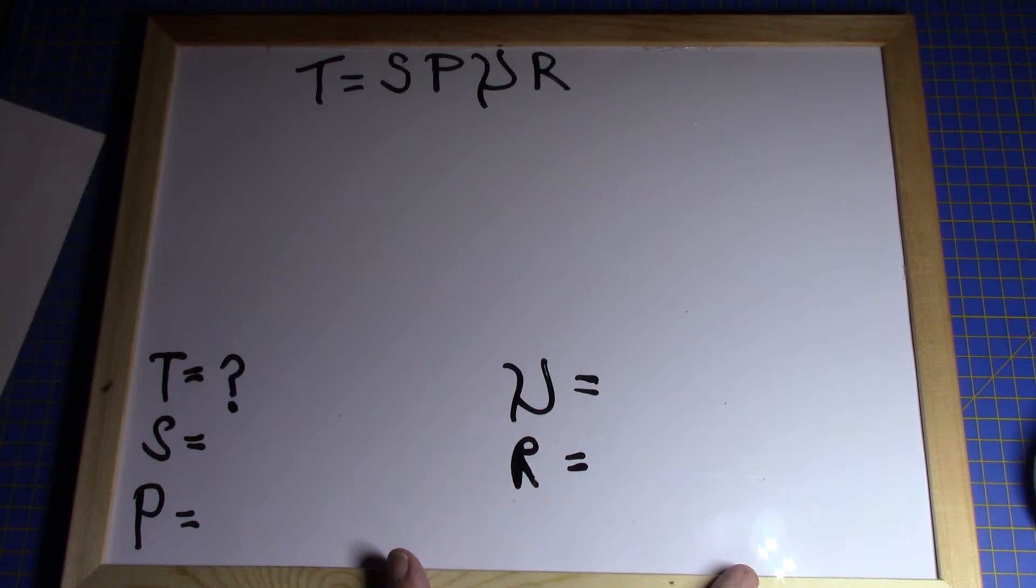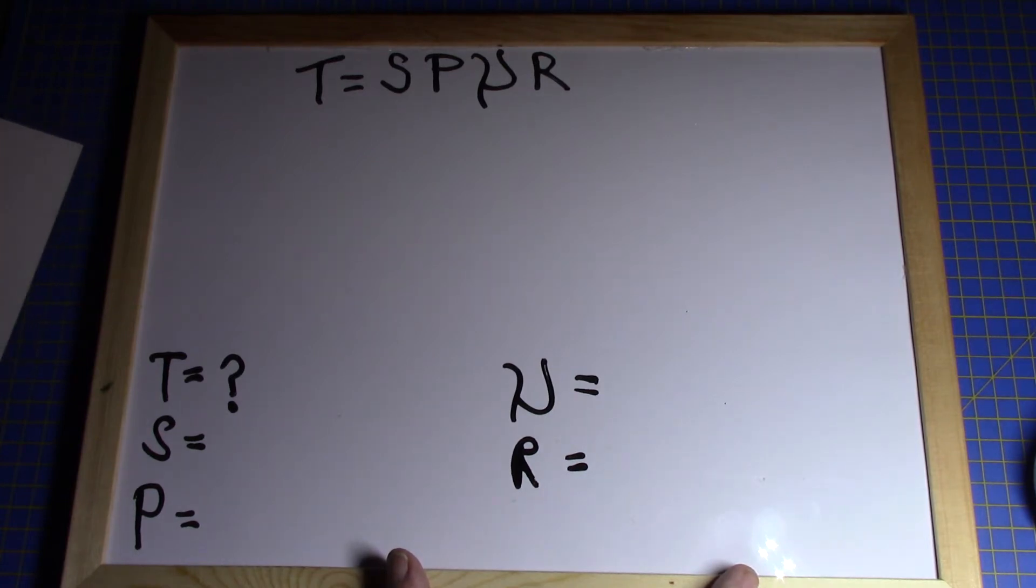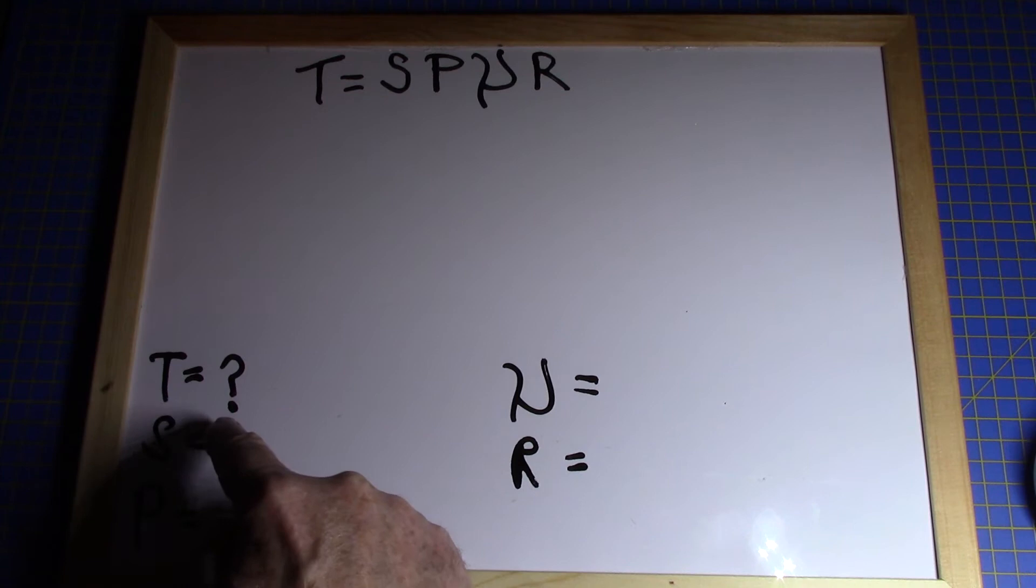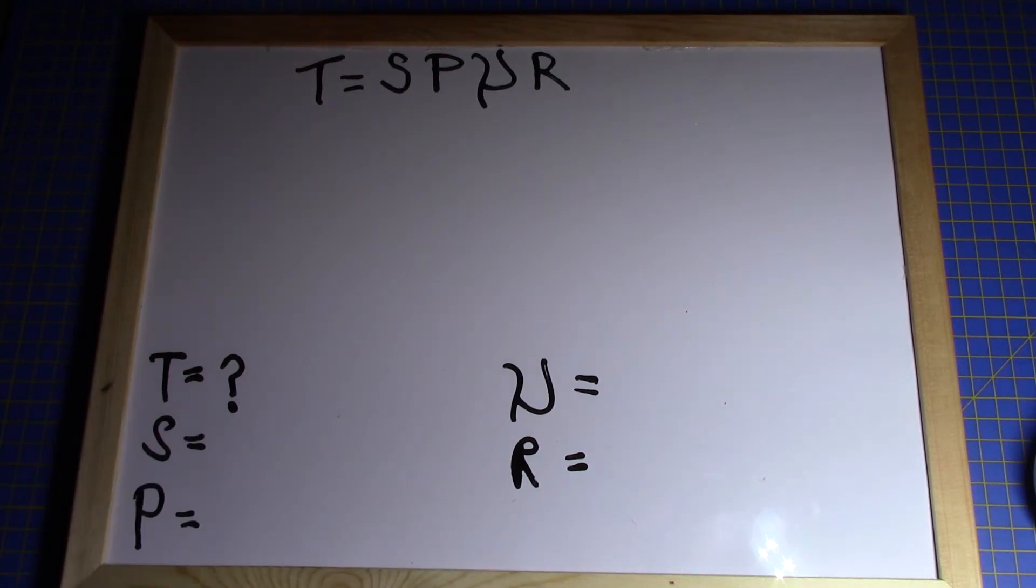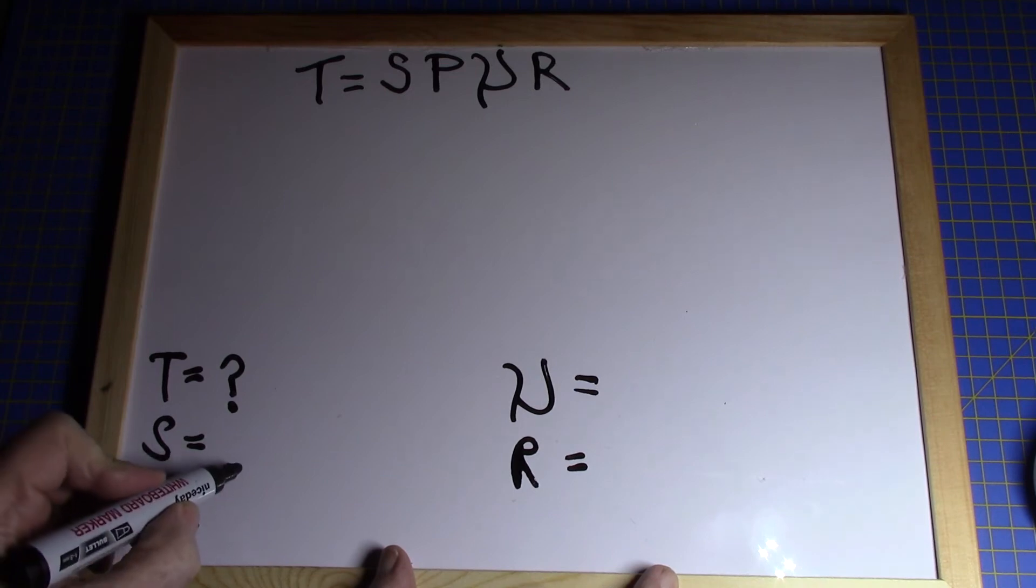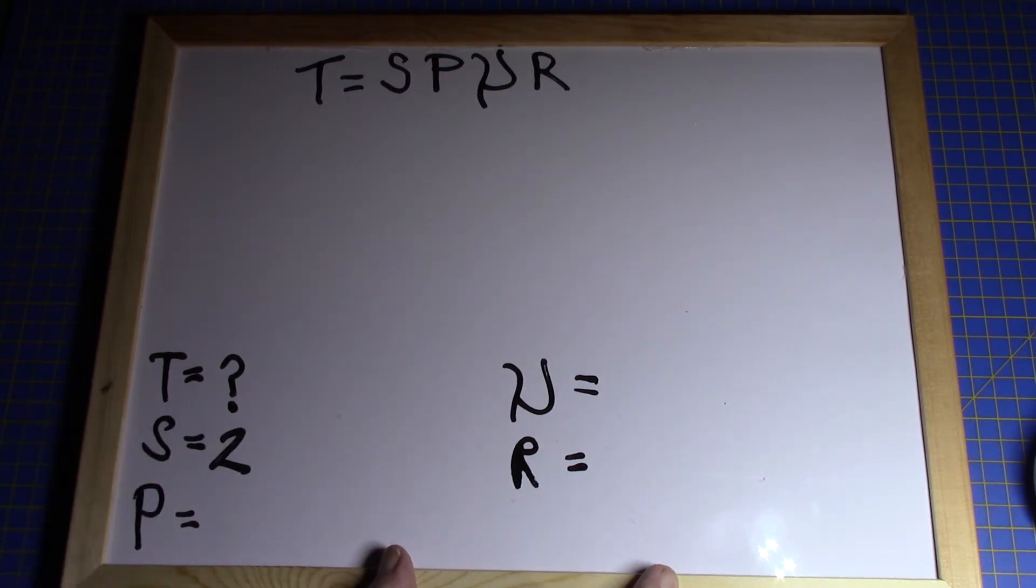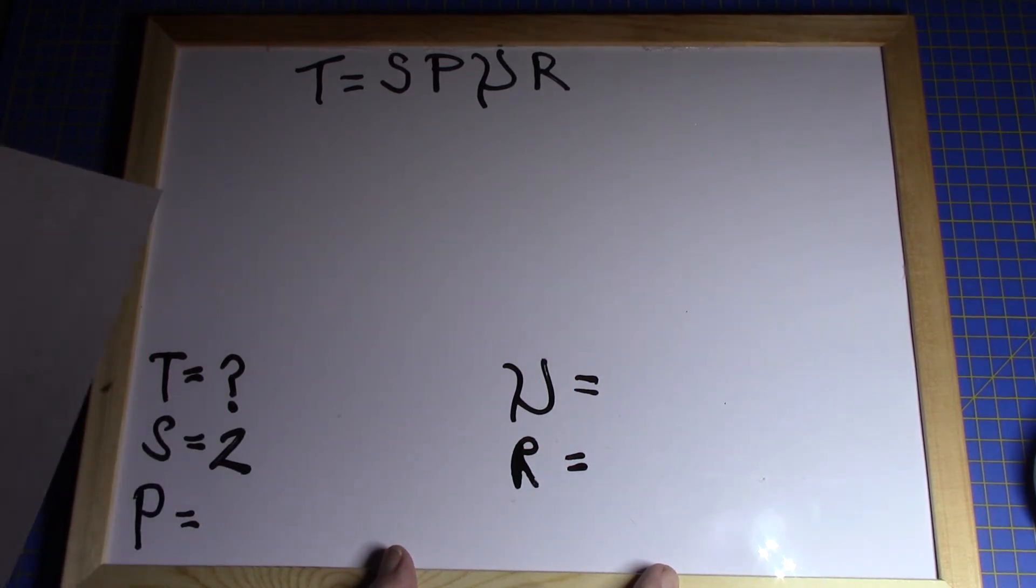Let's read the question. Calculate the torque transmitted by a single plate dry clutch. We've already got that as torque transmitted equals question mark. A single plate has two surfaces: one between the flywheel and the front of the clutch, the second surface is between the back of the clutch and the pressure plate, so that becomes a two.